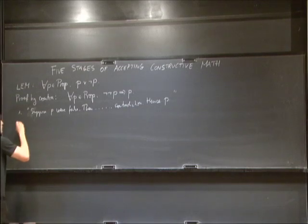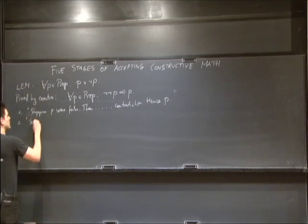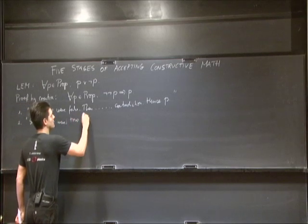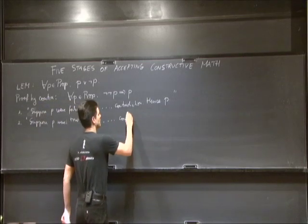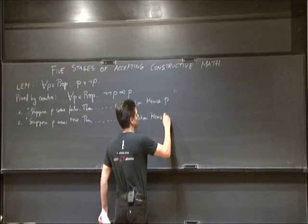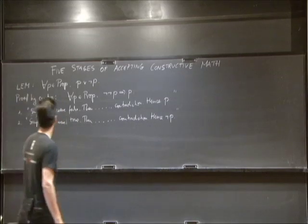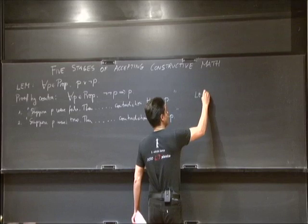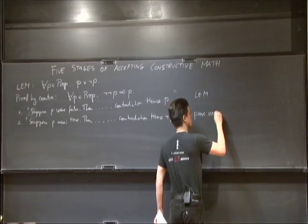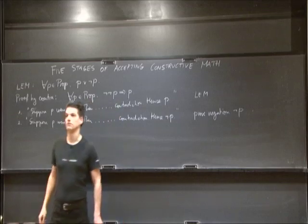The second thing also called proof by contradiction goes like this: suppose P were true, then [reasoning], contradiction, hence not-P. This is not the same. The first is equivalent to the law of excluded middle, but the second is just how you prove negation — and it is constructively valid.